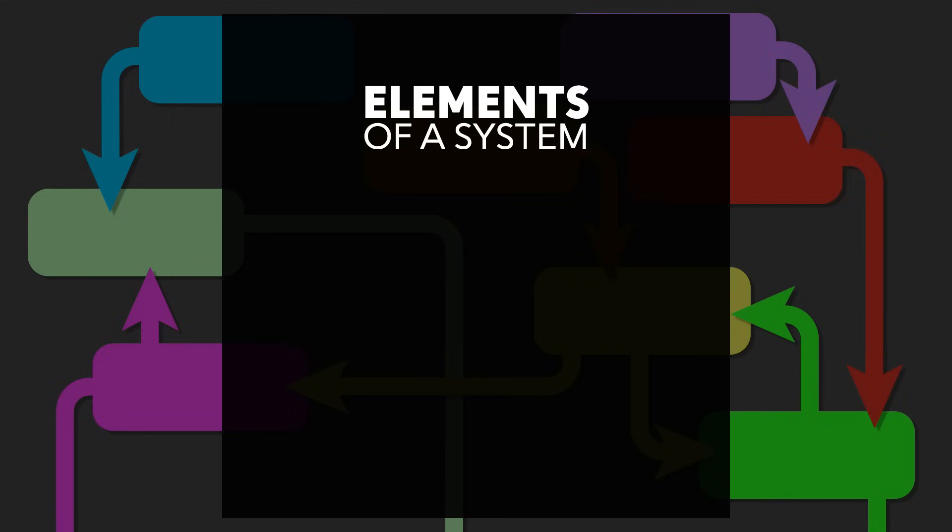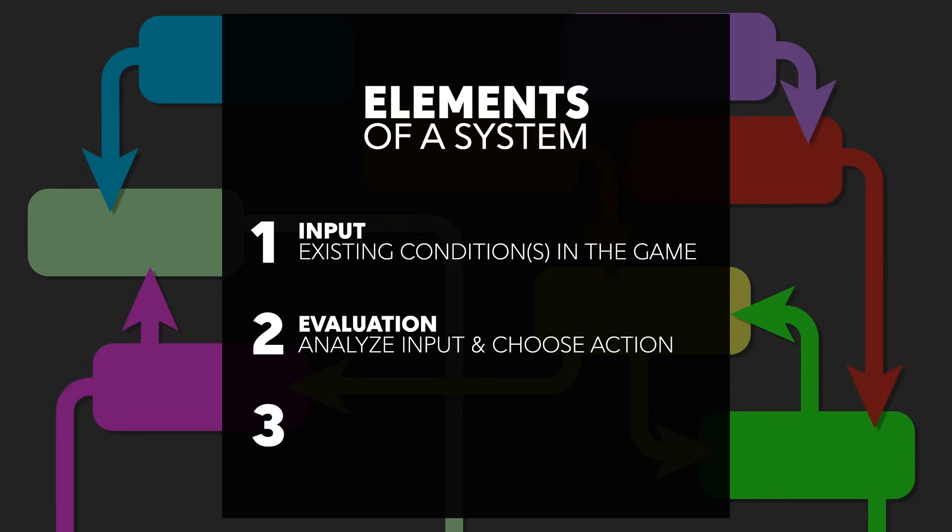While it's a vague definition, it does give us a few things to look for. A system is comprised of three elements. Inputs, one or more conditions that exist in the game world. Evaluation, behaviors that analyze these inputs and choose an action to take. And output, changing conditions based on this evaluation.